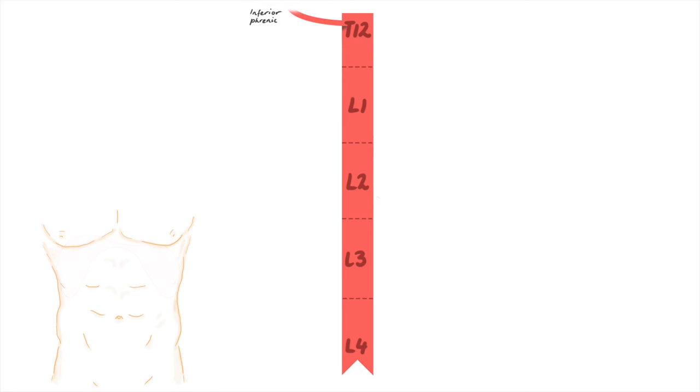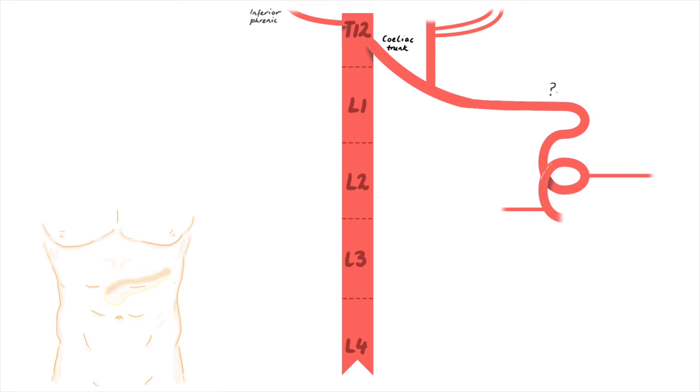Next at T12, the artery that supplies all the organs at the top of the abdomen. It comes from the ancient Greek word for belly. It is the celiac trunk. What three main arteries does it send off? One that follows a coiled path over the pancreas, the splenic artery. One which goes straight to the stomach, the left gastric artery. And one which runs to the liver, the common hepatic artery.